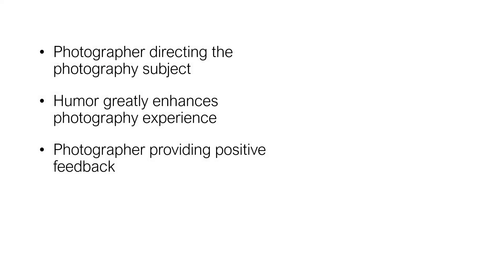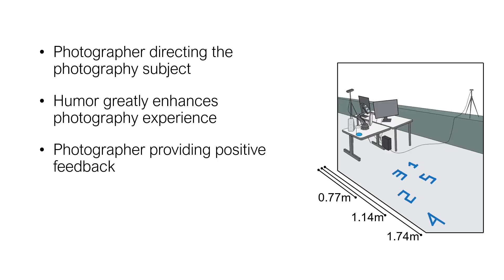We took these three points of feedback and decided to implement all of them on our robot. To allow our robot to direct the subjects, we added five numbers to the floor, as can be seen in the sketch on the right. We had the robot direct the subjects and where to stand by telling them which number to stand on top of.